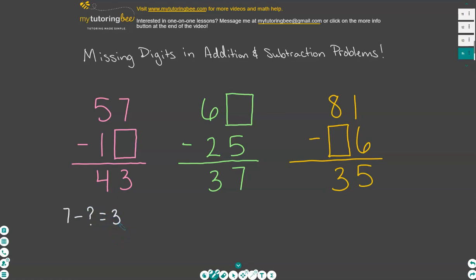So 7 minus whatever our mystery number equals 3. Again, think of those fact families. So that can also be written as 3 plus something equals 7, which might be an easier way to think about this problem as an addition rather than a subtraction problem. So that mystery number would be 4. So 7 minus 4 equals 3. We didn't have to regroup. 5 minus 1 equals 4. Great, so we get 43 for that one.